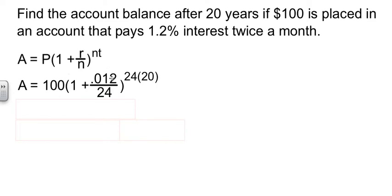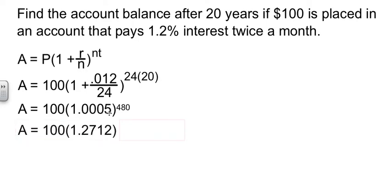24 times a year, and then 24 times 20 is the exponent. Did a little bit of arithmetic here. I did the division, and I did this multiplication. 1.0005 to the 480th gives me this, according to my calculator, and then times 100 gave me this. So my $100 is now worth $127.12 in 20 years. You can probably find a better investment than that. Just saying.